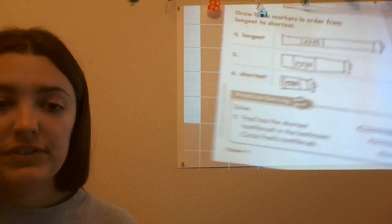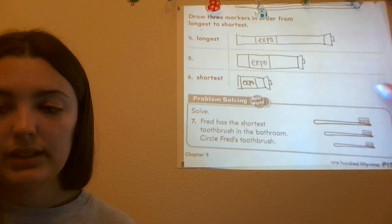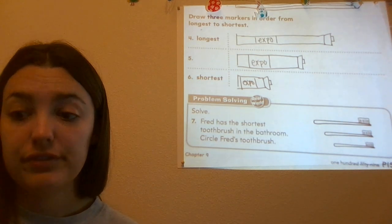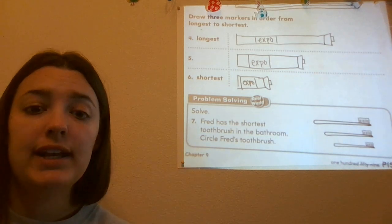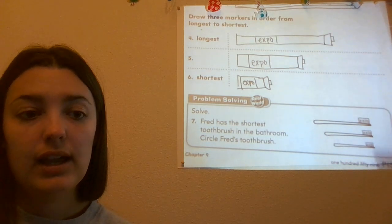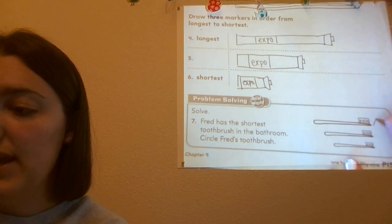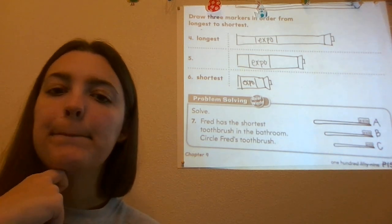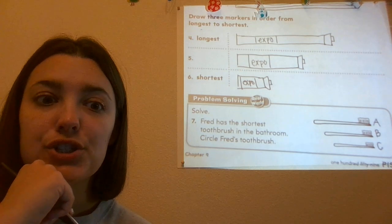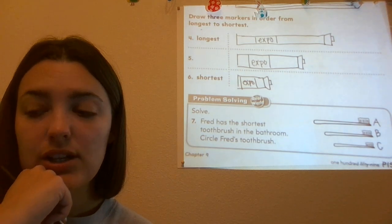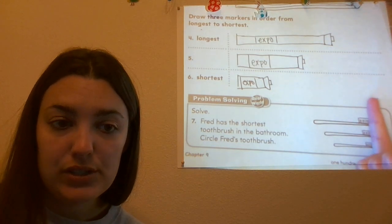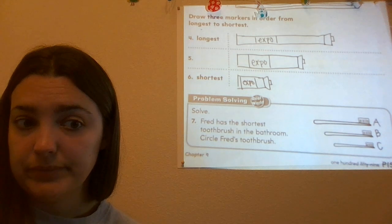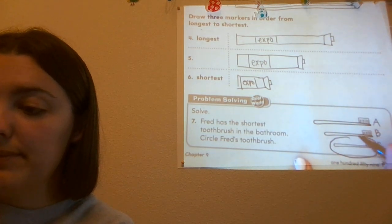We have one more problem at the bottom. It says Fred has the shortest toothbrush in the bathroom — circle Fred's toothbrush. We know Fred has the shortest one so we're going to look for the shortest and circle that one. Let's say this is toothbrush A, this is toothbrush B, and this is toothbrush C. Which one of those is the shortest? The good news is they're all starting from the same point so it's easy to see which one is the shortest — shorter than all the others. Hopefully you picked C. I'm going to circle C.